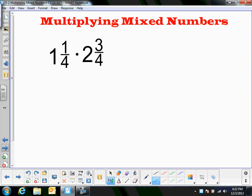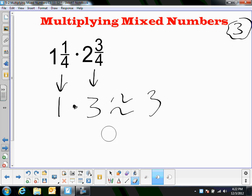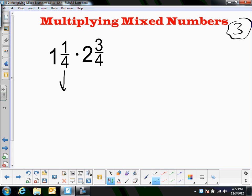So, here's another example. And, actually, this time I'm going to estimate first. So, if I round 1 and 1 fourth to 1 times 2 and 3 fourths is about 3. My answer should be about 1 times 3. It should be like 3-ish. So, I'll just put that kind of off to the side and say, my answer should be something around 3. And, now, I'll actually do the work. So, 4 times 1 is 4 plus 1 is 5. So, that's 5 fourths times 2 times 4 is 8 plus 3 is 11. So, I get 5 fourths times 11 fourths.